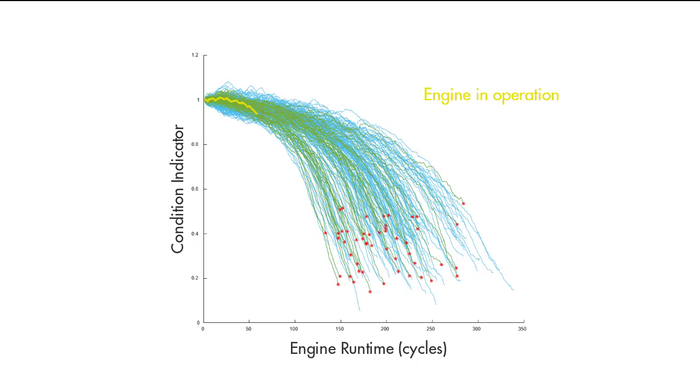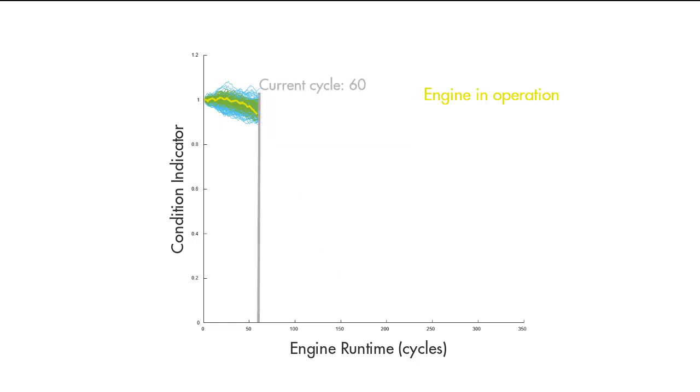At the current time, the engine is at 60 cycles. The similarity model first finds the closest engine profiles to our engine up to the current cycle. Since our engine deteriorates similar to these engines,